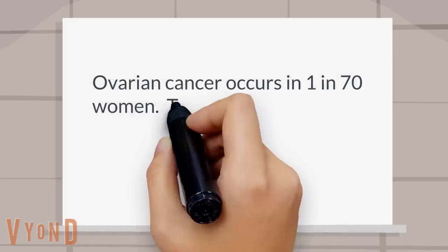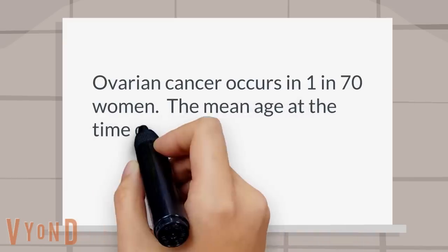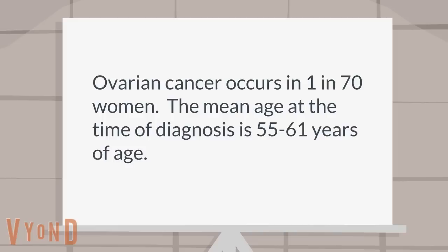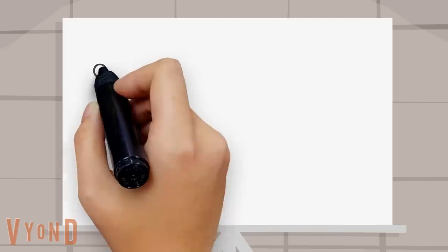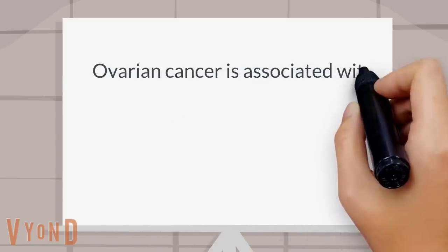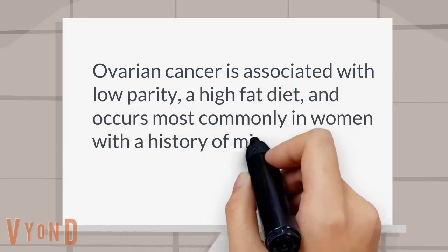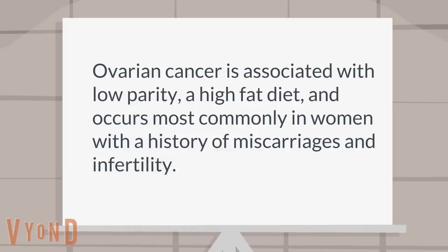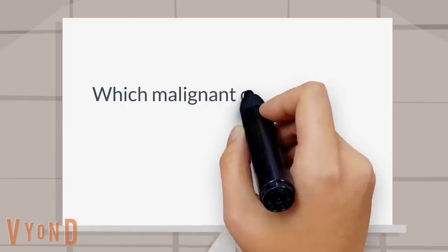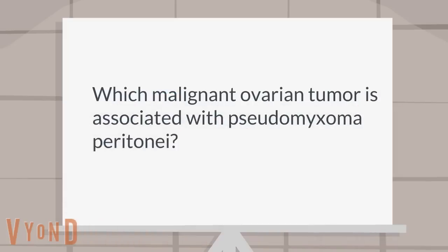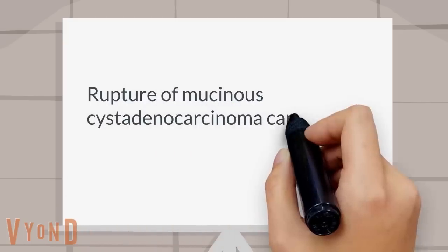What is the incidence and what are the risk factors for ovarian cancer? Ovarian cancer occurs in 1 in 70 women. The mean age at the time of diagnosis is 55 to 61 years of age. Ovarian cancer is associated with low parity, a high fat diet, and occurs most commonly in women with a history of miscarriages and infertility.